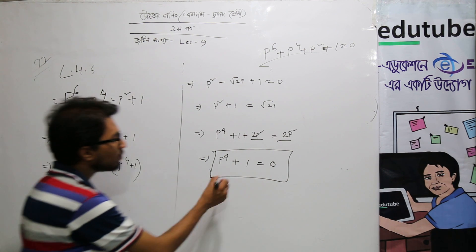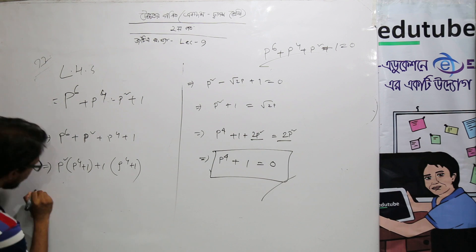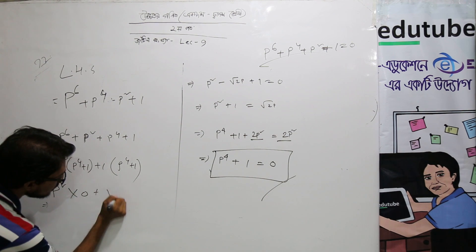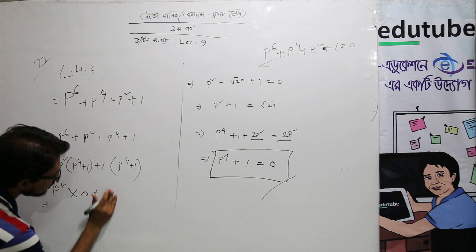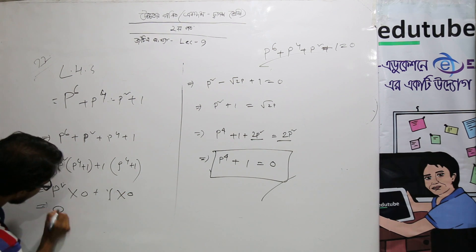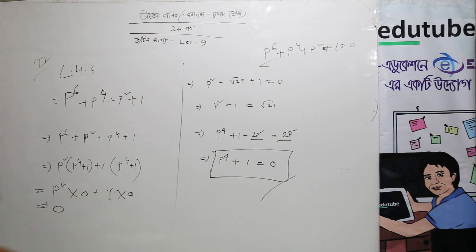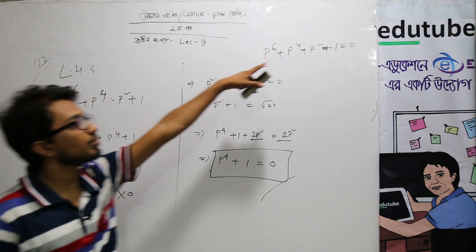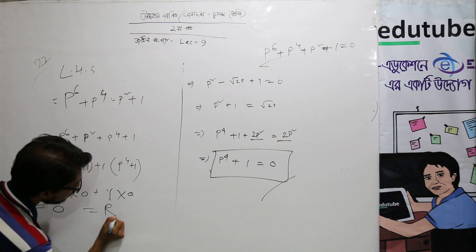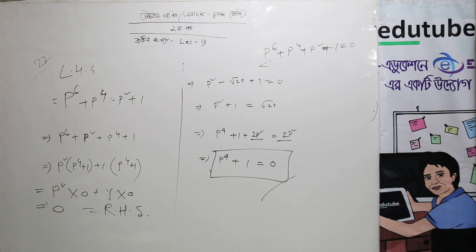p is equal to 0. So p squared into 0 plus 1 into 0 is equal to 0. This is the right hand side. We have proved this.